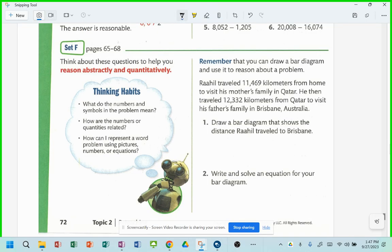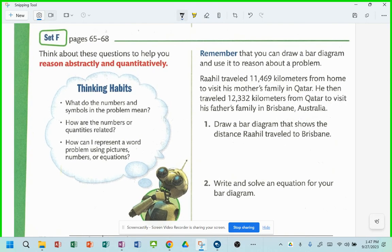It's like you get double of everything. All right, so Raheel traveled 11,469 kilometers from home to visit his mother's family in Qatar. He then traveled 12,332 kilometers from Qatar to visit his father's family in Brisbane, Australia.